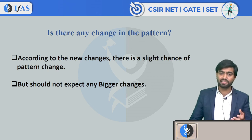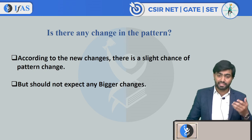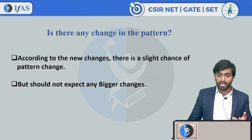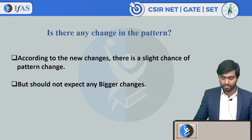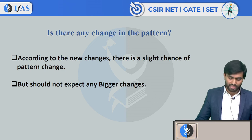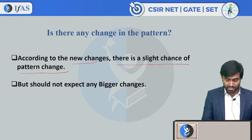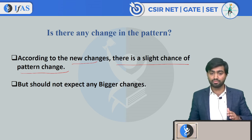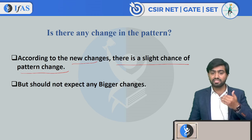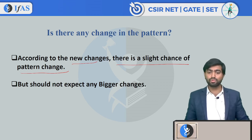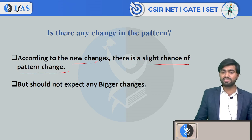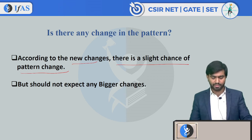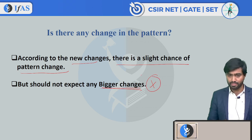As of now, there is a slight chance of a pattern change due to the addition of the PhD admission option, but the change won't be drastic — questions won't be reshuffled significantly. One possibility is that in the aptitude section, research methodology questions may increase since the exam now also serves as a PhD entrance exam. No bigger changes are expected beyond that.